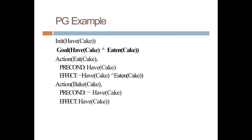Let's take a planning graph example — this example is from the Russell and Norvig AI textbook, which is in your syllabus. The initial state is: I have cake and I have not eaten it. The goal is: I have eaten the cake. So the action is 'Eat Cake'. The precondition for eating the cake is: Have Cake — if I have cake, then I can eat.